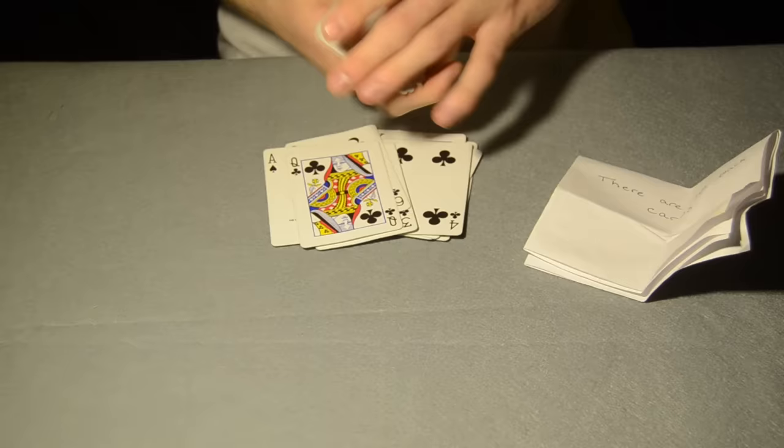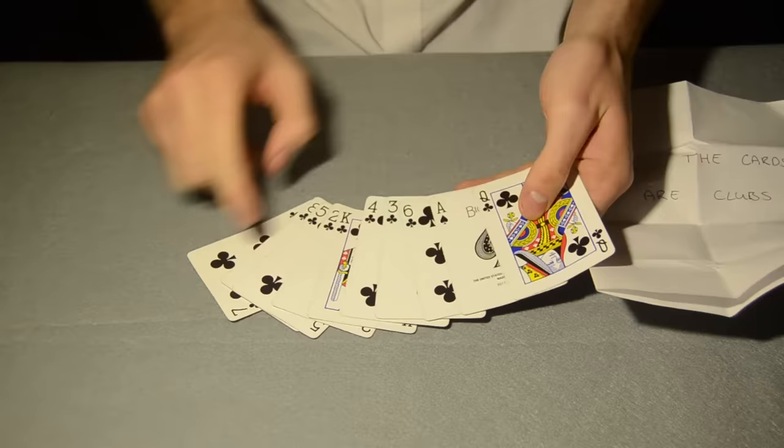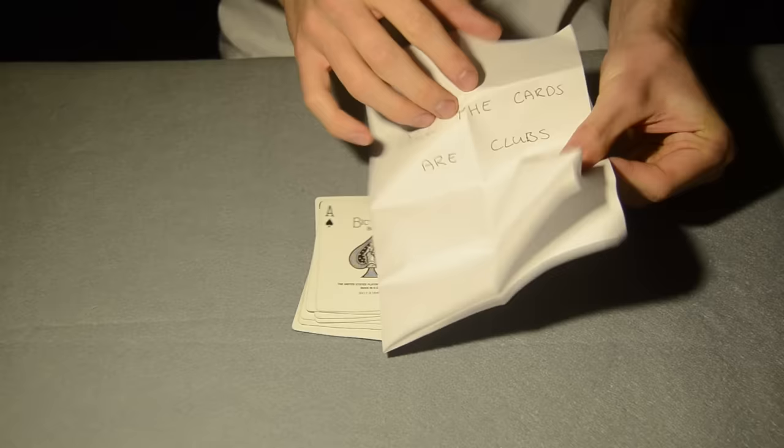Instead of just having except for the Ace of Spades written on a piece of paper, instead you could maybe print it on your t-shirt, or on the back of the Ace of Spades write except for the Ace of Spades. The beauty of this trick is it's very open and you can take it yourself and find your own method and way of performing it.